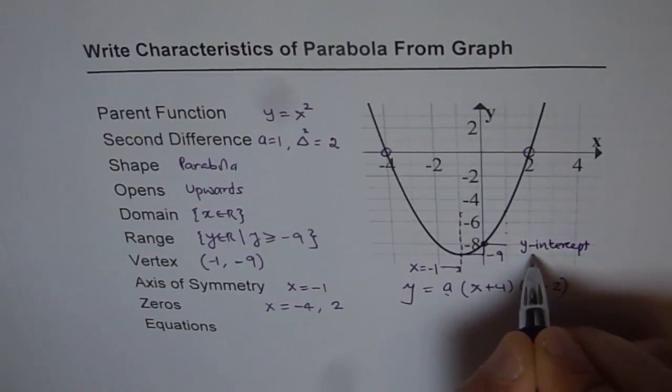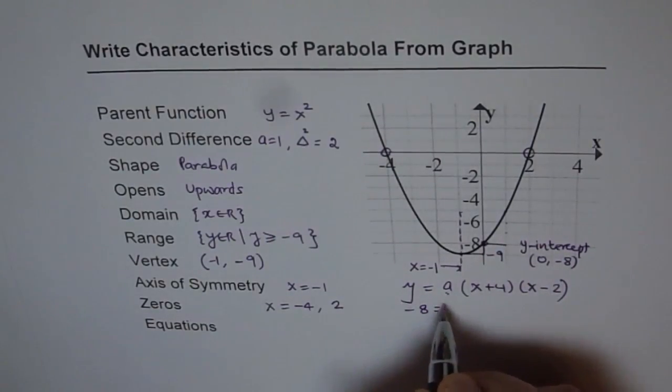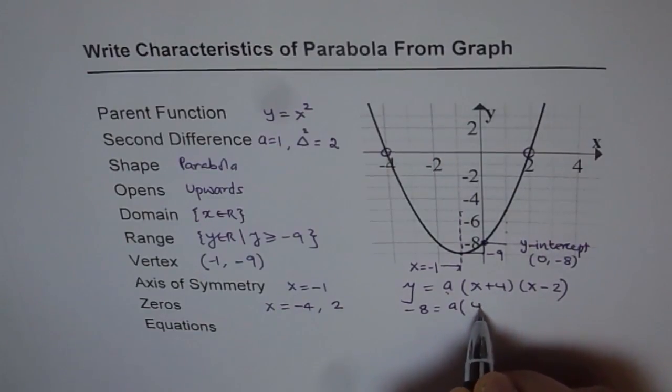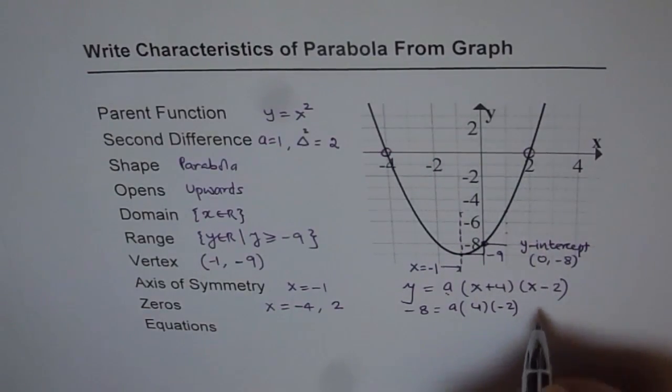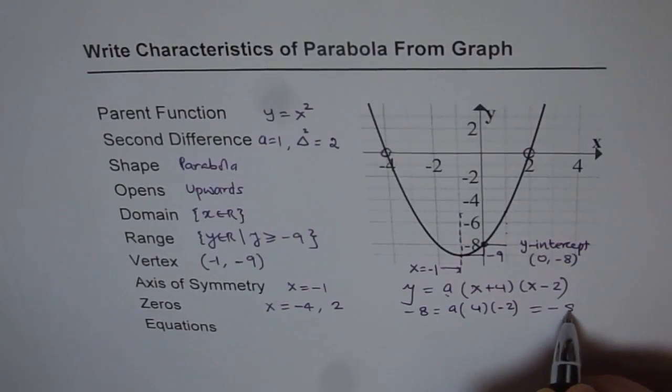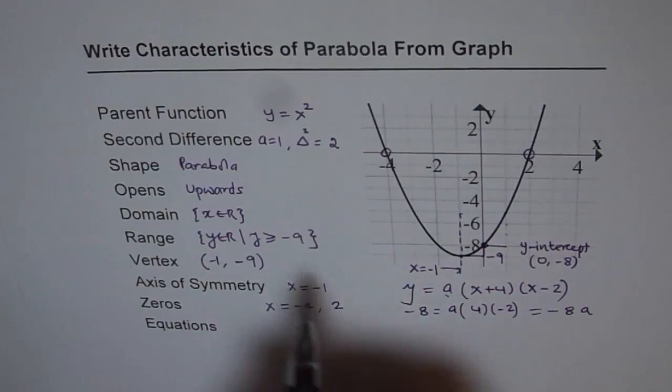y-intercept is at (0, minus 8). So minus 8 is the value of y and for 0, for x, 0 plus 4 is 4 times minus 2. That is, we get minus 8a. So therefore, we do get the same value of a as we assumed.